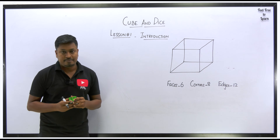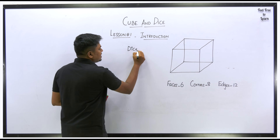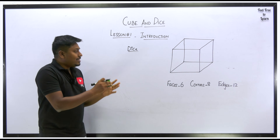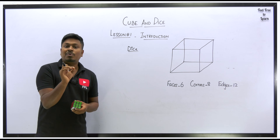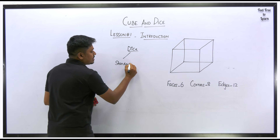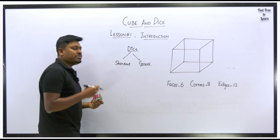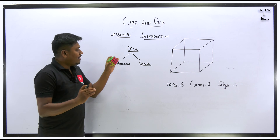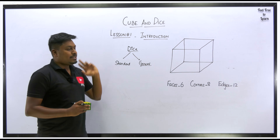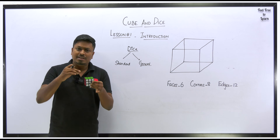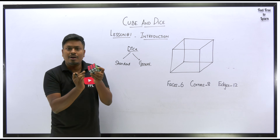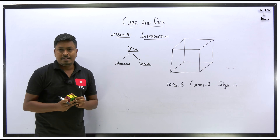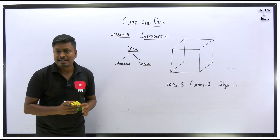Everyone has seen a dice in childhood — we play Ludo and Snakes and Ladders using a dice. In quantitative aptitude, there are two types of dice: one is called a standard dice and the second is called a general dice. Some students also call the general dice a non-standard dice. So totally, dice has two types — standard dice and general dice (or non-standard dice).